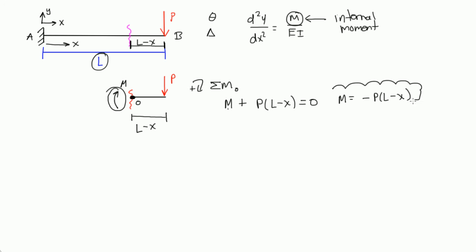And if I solved for m, I'd get negative P(L-x). So this is our very sacred moment equation for use in this equation. This is our internal moment along any point for this whole span, and we looked at the right side. It really doesn't matter which side you look at. They'll both end up with the same final two equations for slope and deflection.